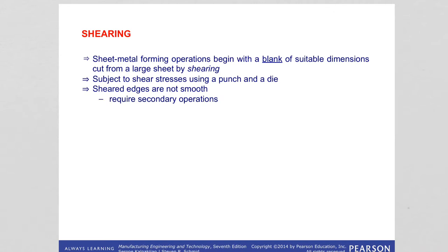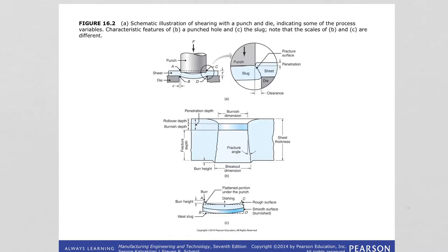We will start with shearing — the technique by which blanks are cut from large sheets and then further processed into desired shapes. All sheet metal forming operations begin with a blank of suitable dimensions cut from a large sheet by shearing. Shearing is achieved using a punch and a die, and it induces shear stresses in the sheet. If you take a look at this figure illustrating shearing with the punch and die, the die is shown here.